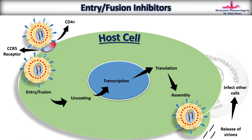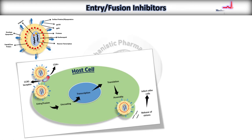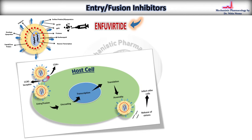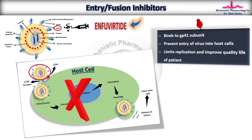The example of an entry or fusion inhibitor is enfuvirtide. This drug comes in injectable form and binds to the glycoprotein 41 subunit of HIV, preventing fusion of the viral plasma membrane with the host cell. It affects the conformational change and limits further stages of infection, improving the patient's quality of life. Enfuvirtide is a 36-amino-acid peptide given twice daily via the subcutaneous route.